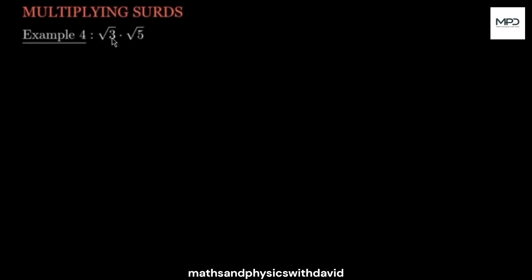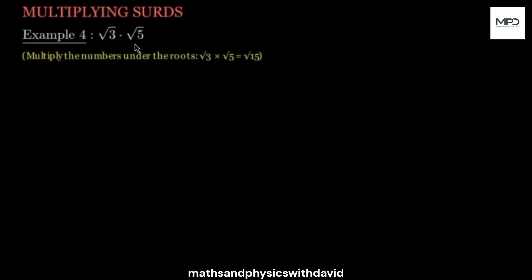We're going to be talking about multiplying surds. How do you multiply surds? If you want to multiply square root of 3 and square root of 5, all you need to do is pick one square root and multiply the numbers inside the square root. So you're going to have square root of 3 times 5, which gives you square root of 15.